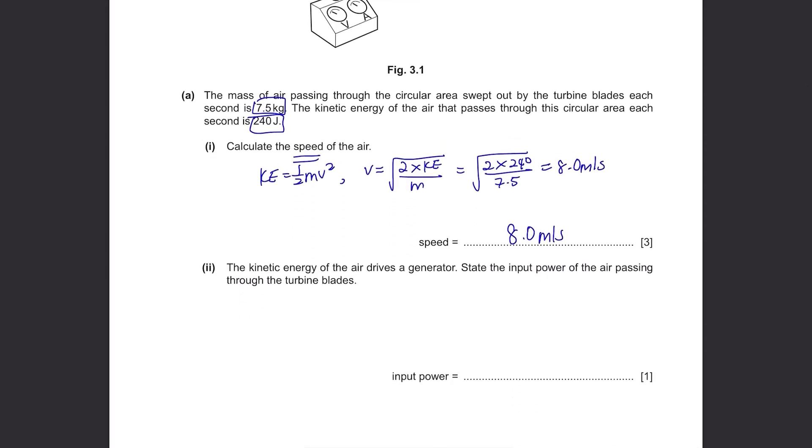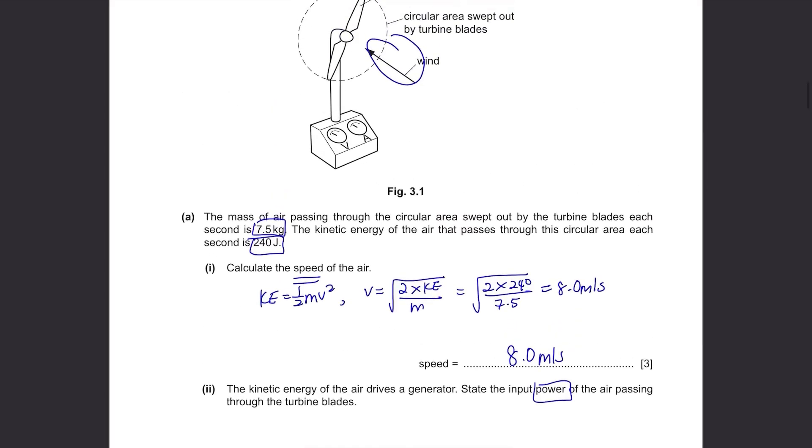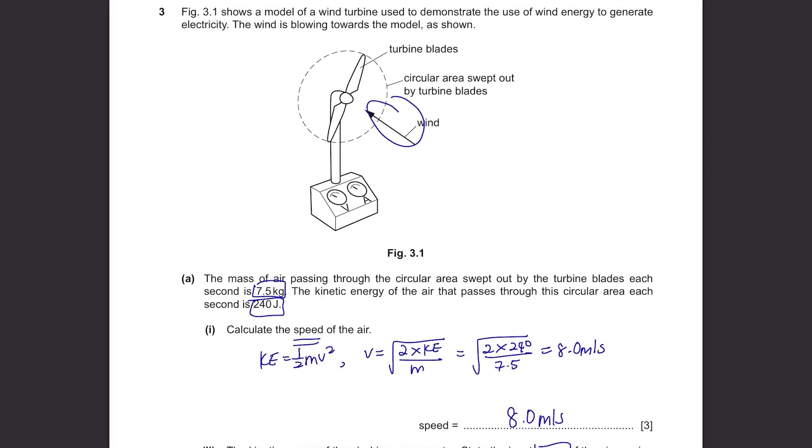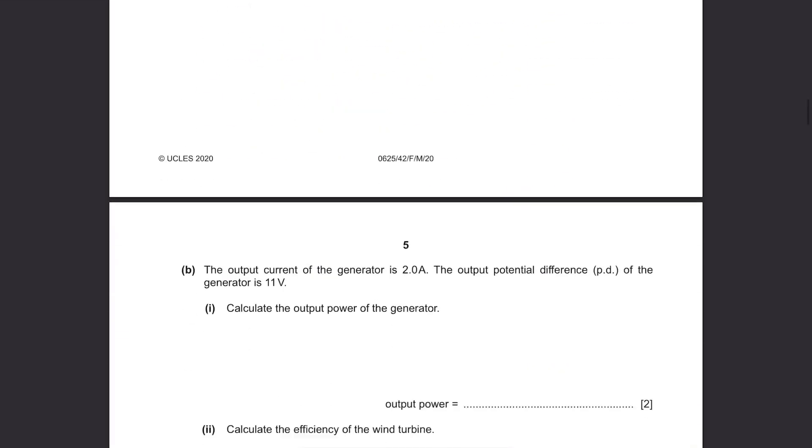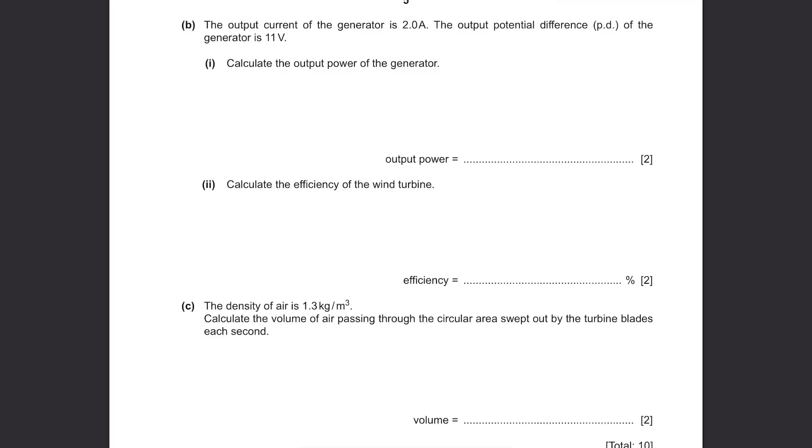The kinetic energy of the air drives a generator stating input power of the air passing through the turbine blades. We have to find the power and power is energy per second. They've already stated in the question that it's the energy that passes through each second, 240 joules. So we can just assume that this also stands for power. The output current of the generator is 2 amperes. The output potential difference of the generator is 11 volts. Calculate the output power of the generator. Power this time equals voltage multiplied by the current. So it's 11 times 2 equals 22 watts.